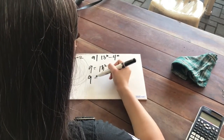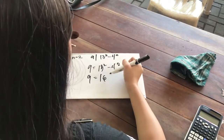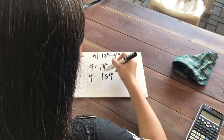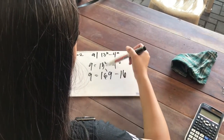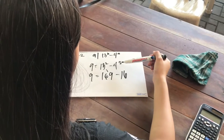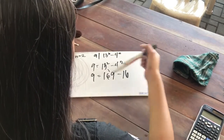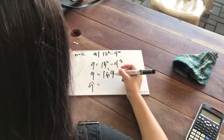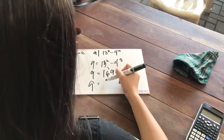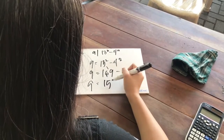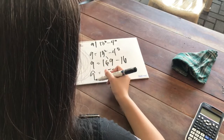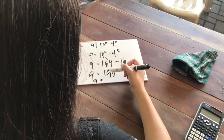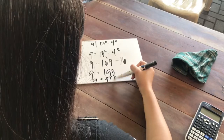For n equals 2: 13 raised to 2 minus 4 raised to 2 is equal to 169 minus 16, which equals 153. And 153 is divisible by 9, since 9 times 17 equals 153.